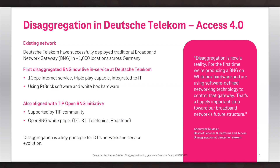Our journey into disaggregation at Deutsche Telekom started a couple of years back when some people of our architecture team investigated AT&T's CORD approach. CORD stands for Central Office Re-architected as a Data Center, and as the name implies, the basic idea of CORD is to replace existing black boxes in the access and aggregation network with bare metal servers and bare metal switches and run open software on top of it. For us, CORD was the starting point. We developed our own solution which meets our requirements, fits into our existing network, and also fits into our existing OSS and BSS systems.